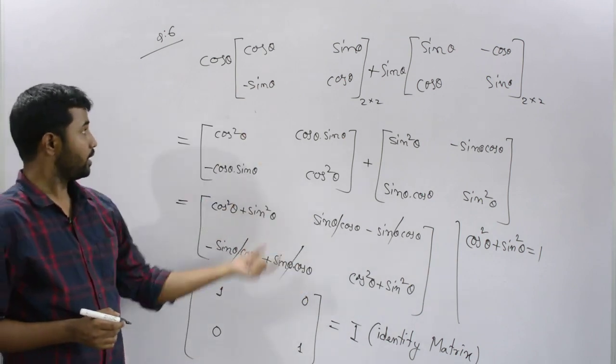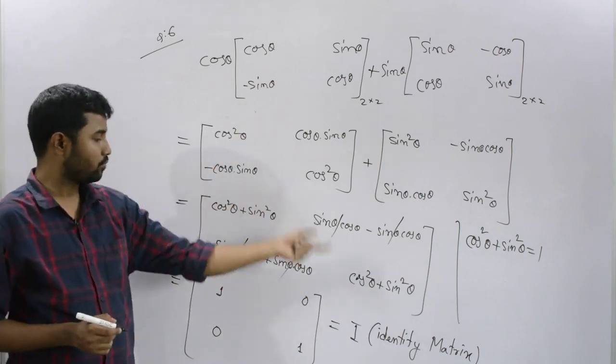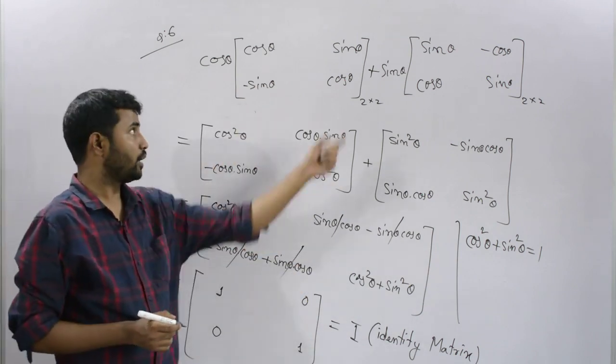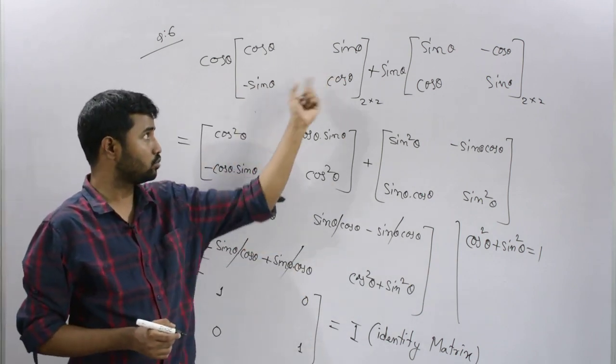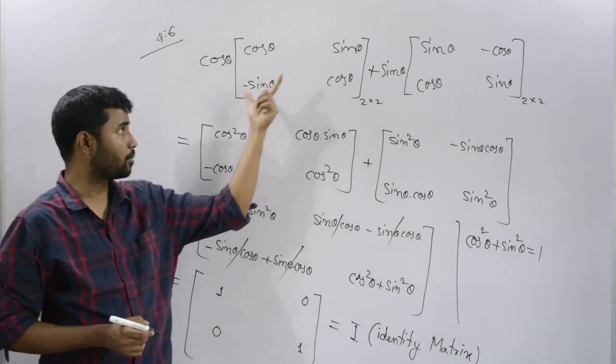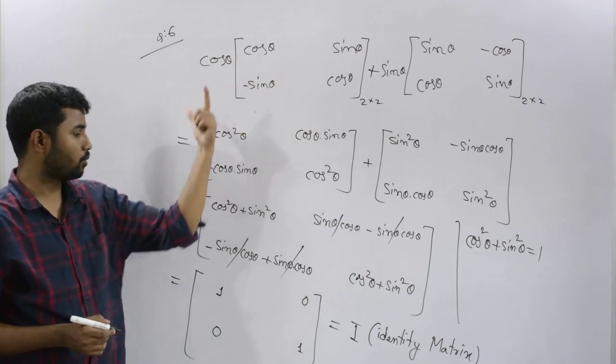That means A squared in simplified form gives the identity matrix. This is our result.